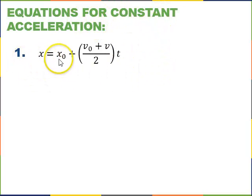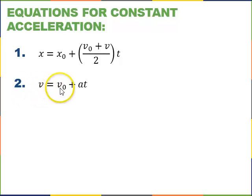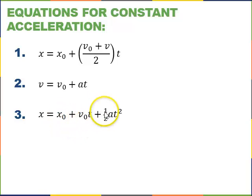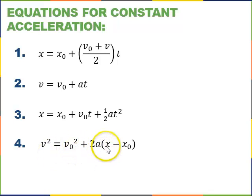I'll just list them first. Equation 1: x equals x-initial plus (v-initial plus v) over 2, times t. Equation 2: v equals v-initial plus at. Equation 3: x equals x-initial plus v-initial times t plus one-half at squared. Equation 4: v squared equals v-initial squared plus 2a times (x minus x-initial).